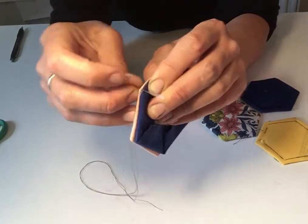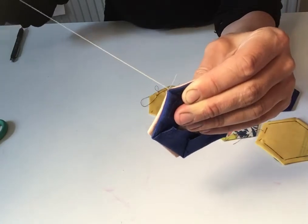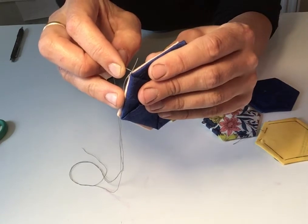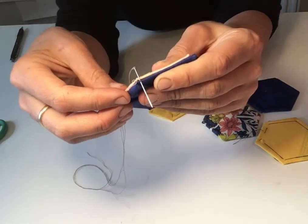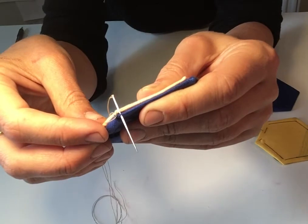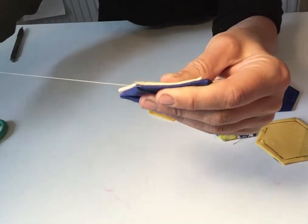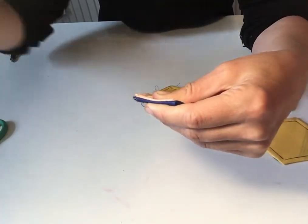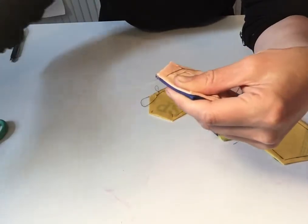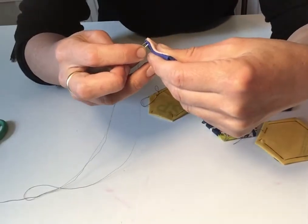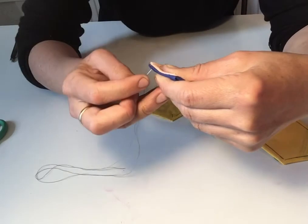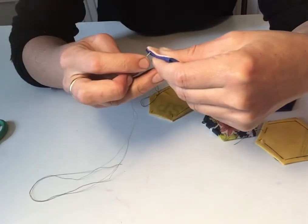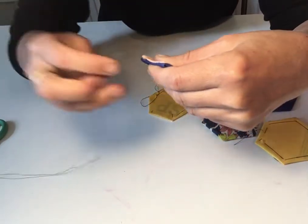And just put the needle through, and maybe do a double stitch at the beginning, and then just stitch along the edge, making sure that your needle catches the pink and blue fabrics. So I'm not catching a lot of material there, but it will be enough to join them together. And you might find when you do this that the needle catches the cardboard template underneath. Don't worry too much if it does, because later on we'll be able to get the cardboard out.